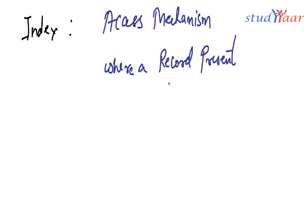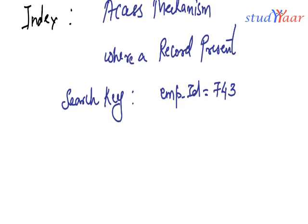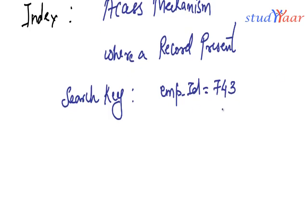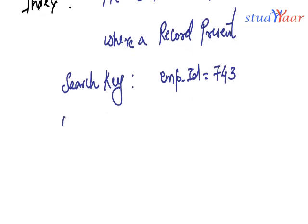On the basis of what does it give me the location? It gives me the location on the basis of a search key. So, let's suppose I want to find out the record of an employee whose employee ID is equal to 743. I would look into the index corresponding to the employee ID equals 743 entry and I would find the address where this employee record is stored.